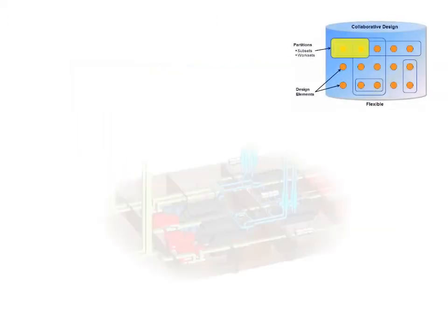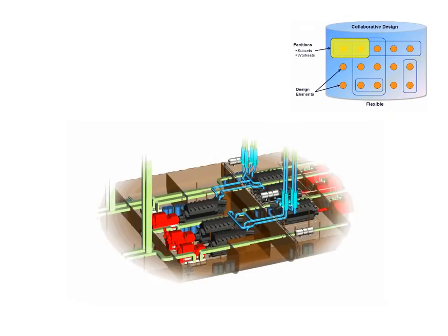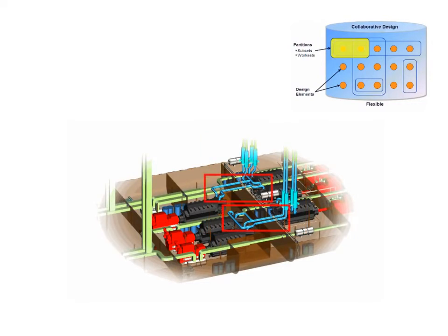For example, within the generator room partition, a work set identifies the piping in a subset of the partition. In the work set, an engineer can analyze a new path for the piping through the engine room. Also, 4GD facilitates the creation of associations between objects and processes, such as each unique weld in a ship structure.